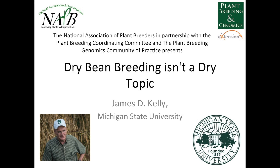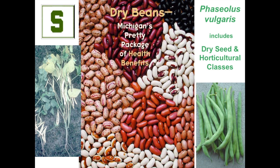Let me start by introducing dry beans to our audience. Dry beans belong to the species in genus Phaseolus vulgaris and these are the dry seed product of beans. Phaseolus vulgaris includes not only dry beans — as you can see in the slide here, the different seed types and color types — but also horticultural types that we know as snap beans or garden beans, shown on the bottom right of the slide. We call them dry beans because they're harvested when they're mature and dry, and also to distinguish them from soybeans.